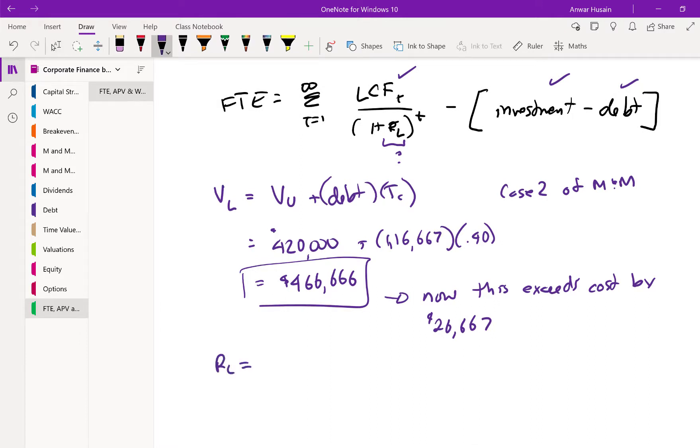So what's RL? RL is equal to the unlevered cost of equity plus debt over equity times 1 minus the tax rate times RU minus RD cost of debt. I think we know almost all of this stuff.